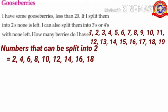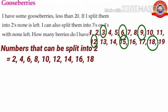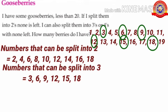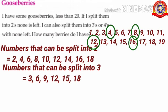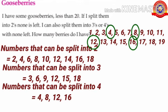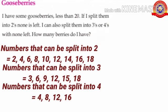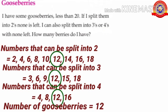See children, which numbers come in the multiplication table of 3? Yes, 3, 6, 9, 12, 15 and 18. So, numbers that can be split into 3 equals 3, 6, 9, 12, 15 and 18. See children, which are the numbers that come in the multiplication table of 4? Yes, 4, 8, 12 and 16. So, numbers that can be split into 4 equals 4, 8, 12 and 16. See children, which number comes in common? Yes, 12. So, number of gooseberries equals 12.